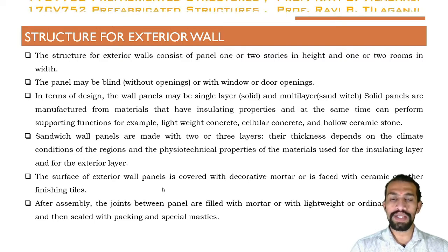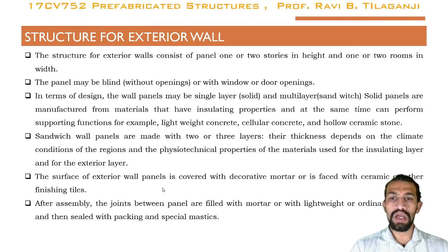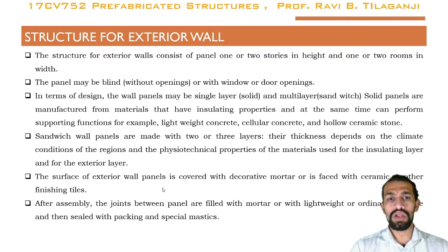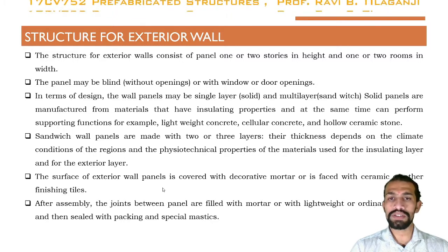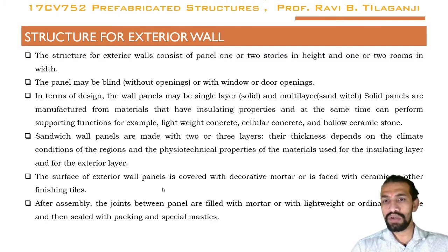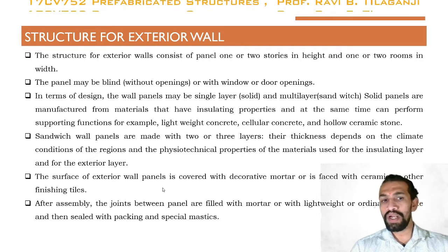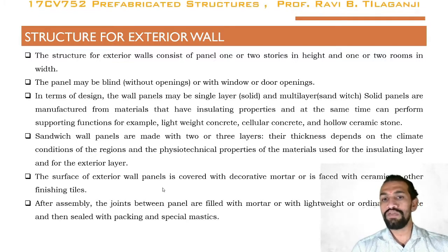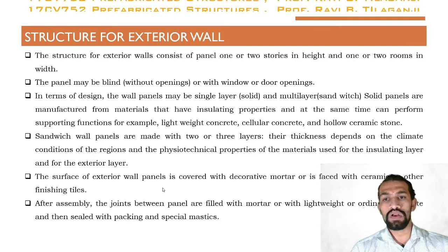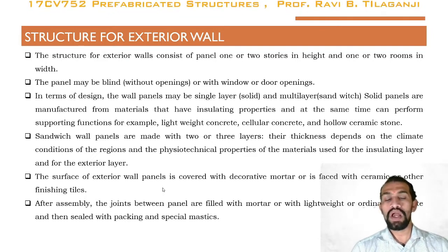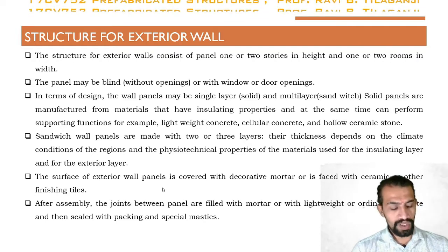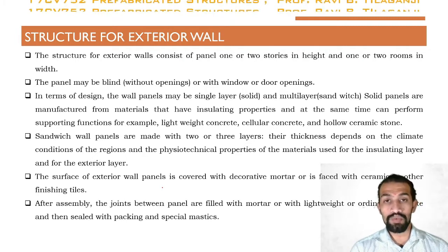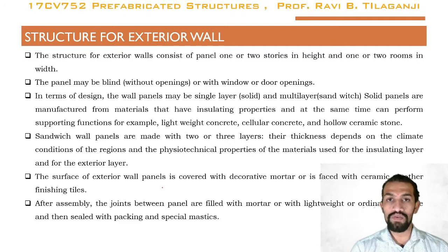Lightweight concrete, cellular concrete, and hollow ceramic stones are commonly used. Sandwich wall panels are made with two or three layers; their thickness depends on the climate conditions of the region and the physio-technical properties of the materials used for the insulating layer and exterior layer. The surface of the exterior wall panel is covered with decorative mortar for an architectural appearance.